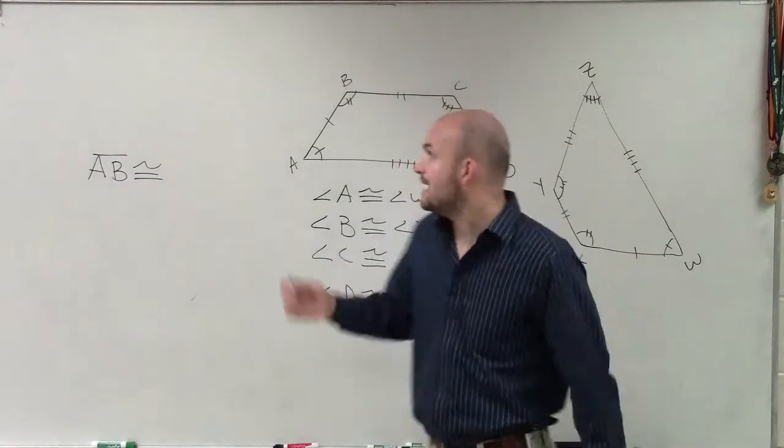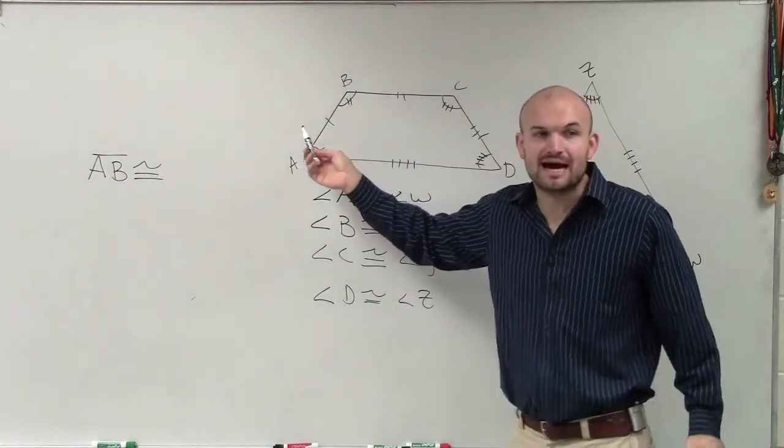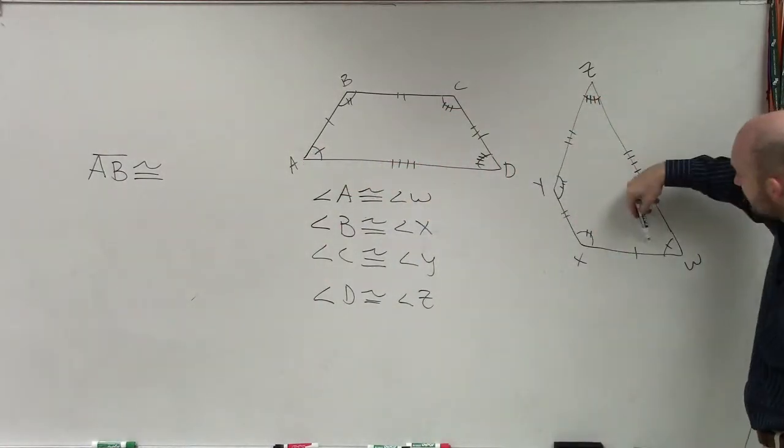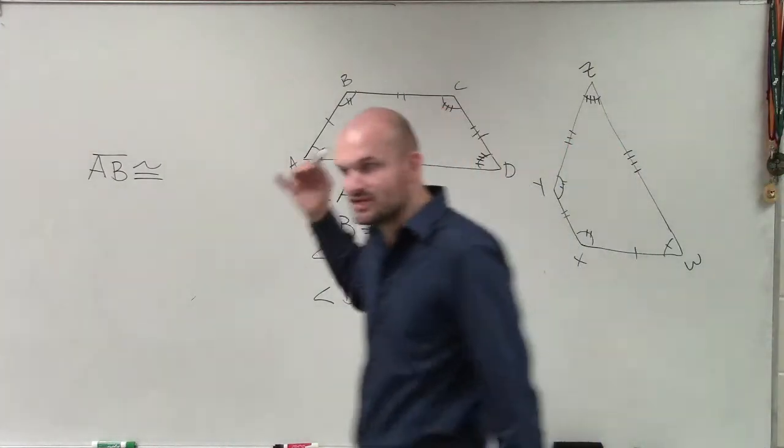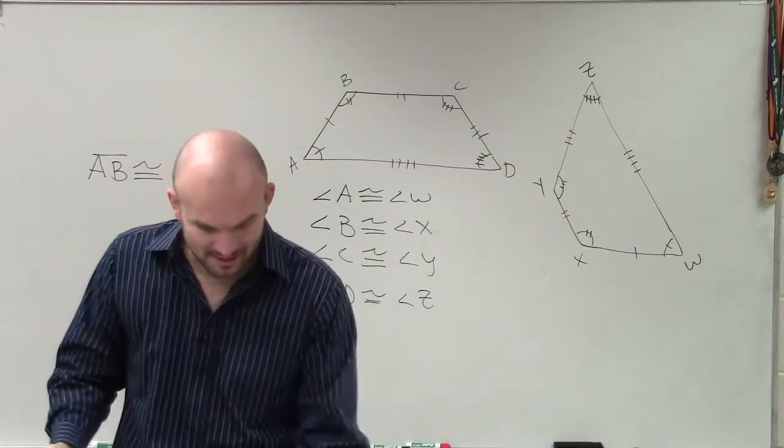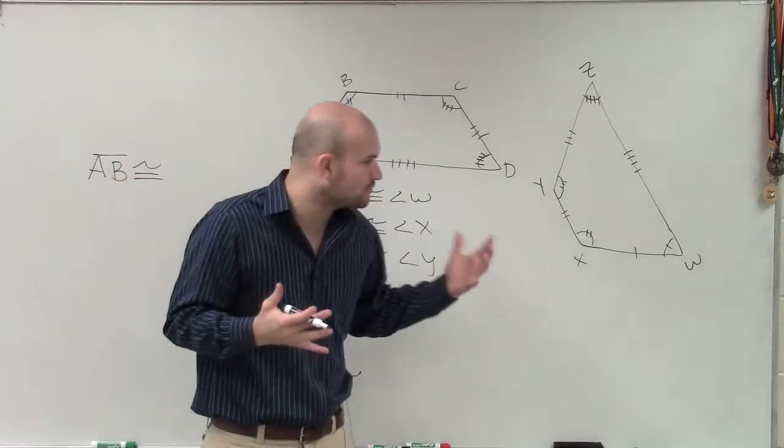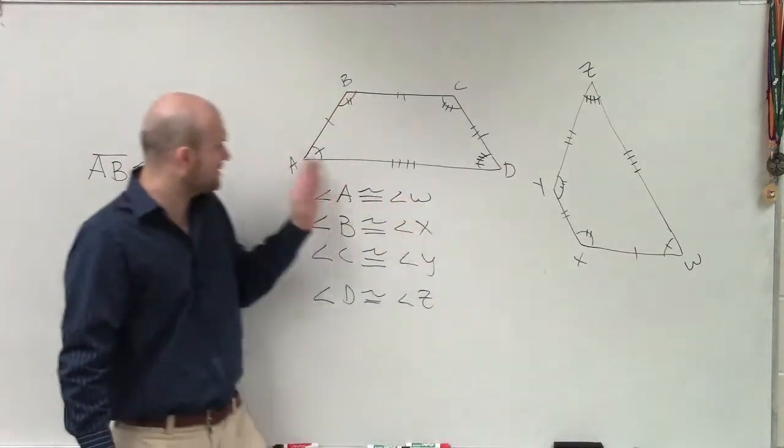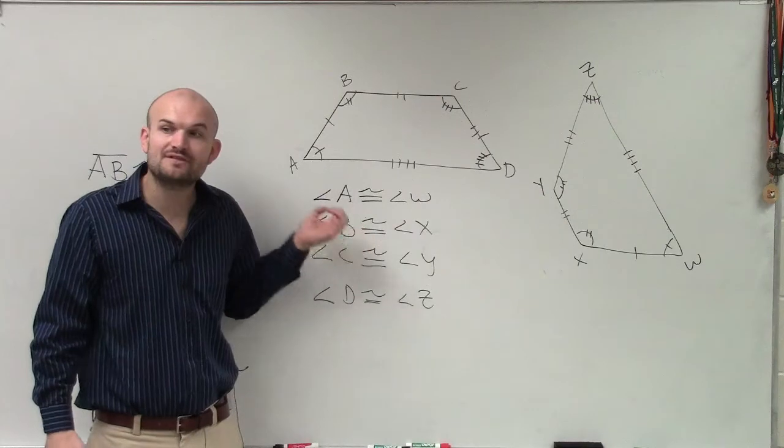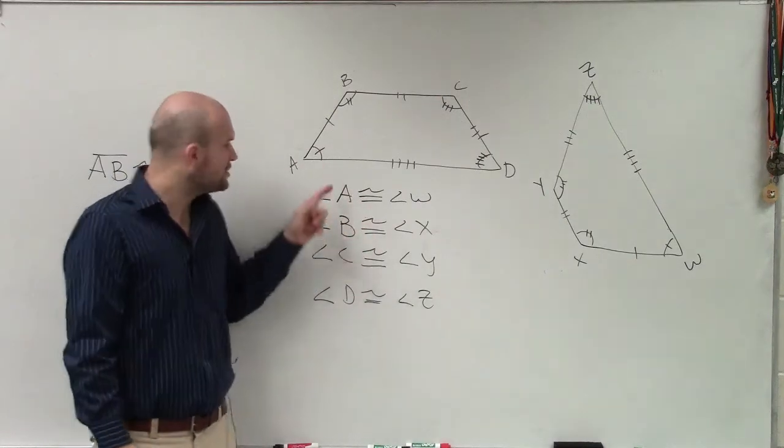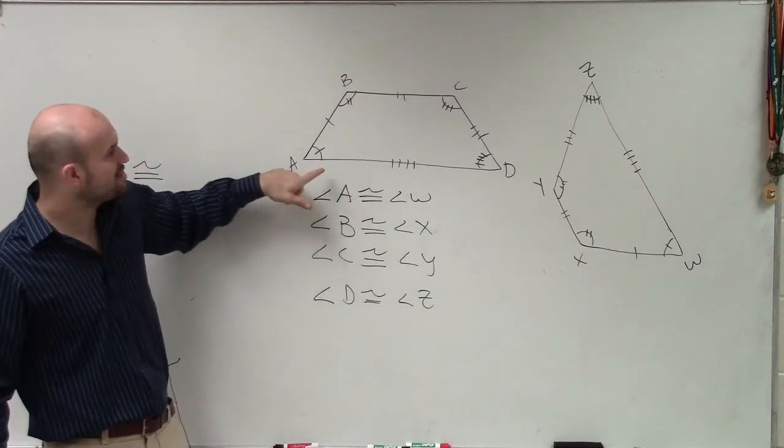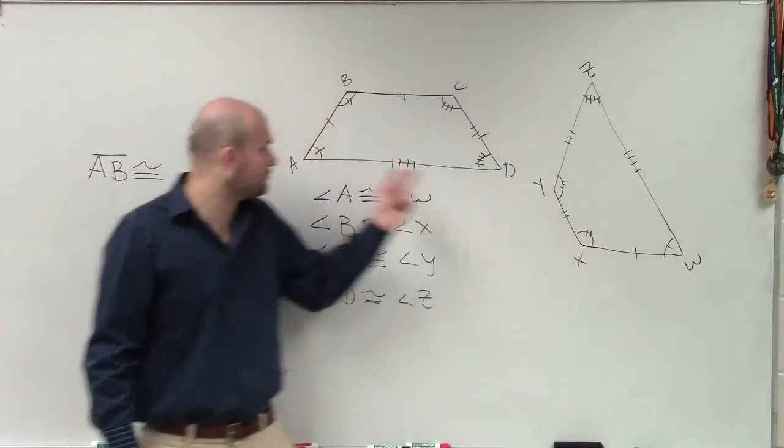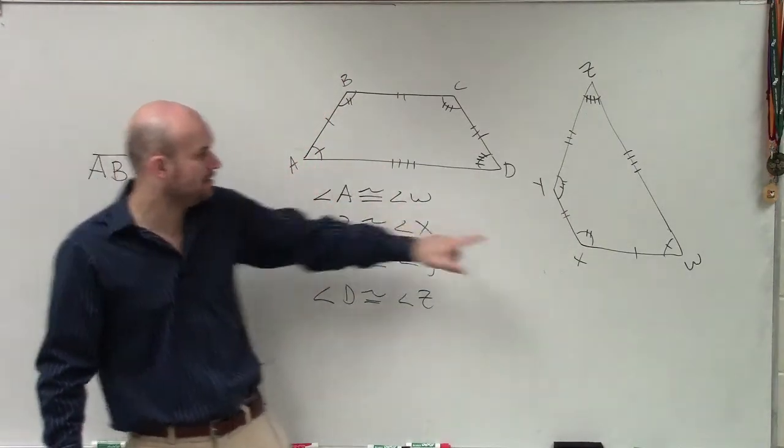We want to look at AB has one tick mark. Well, what side over here has one tick mark? Well, that's this side right here. But the question is the important part about this, which everybody needs to make sure they understand, is we need to be able to see how are we going to write this side length correctly for AB. We have to start it with corresponding angles. So if I go from A to B, I have to make sure on this side length, I start with whatever angle is corresponding to A, which is W.